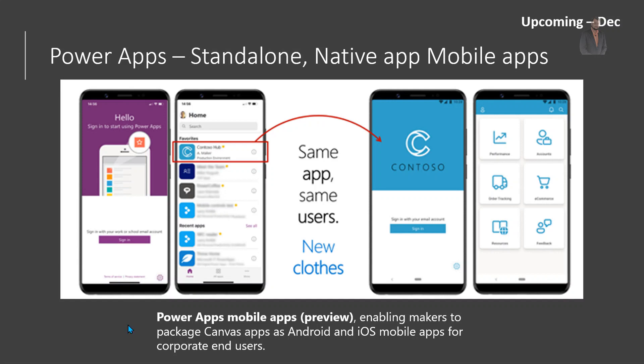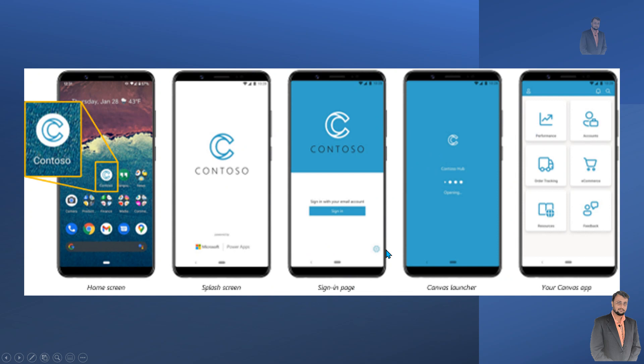This is one of the coolest functionalities rolling out in upcoming December. This new functionality enables makers to package a Canvas app as a standalone native Android or iOS app for corporate and end-users. Earlier, if we wanted to run any Power App, we needed the Power App Player installed on our mobile device. Now, this functionality allows users to install the Power App as a standalone native app on Android or iOS.